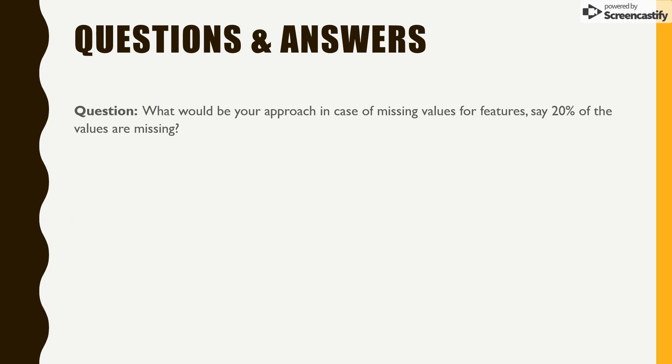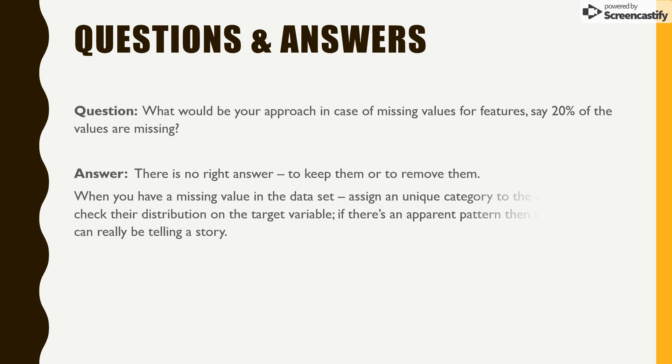Next is, what is your approach in case of missing values? That's a big problem. Data quality in data science is one of the biggest problems you can think of. So assuming that 20% of the values are missing, how are you going to solve that? There is no right answer to keep them or remove them, how to do that. When you have a missing value in the data set,